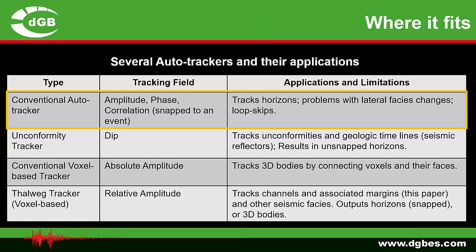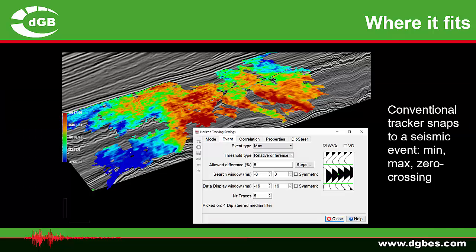Now let's see where this new tracker fits in. Conventional auto-trackers have been around since the 1980s. Basically these track amplitudes, phase, or correlations, and the output is a horizon typically snapped to a certain event. These trackers have problems with lateral facies changes and may have loop skips, especially if the constraints are not set properly. The key thing to remember is that a conventional tracker delivers a two-dimensional surface snapped to an event.